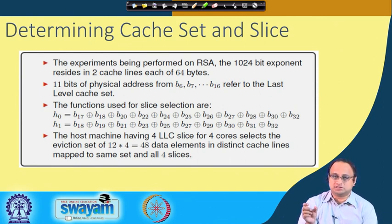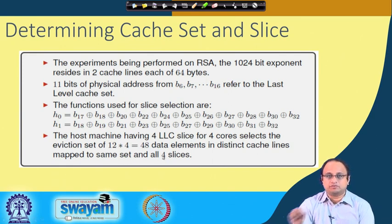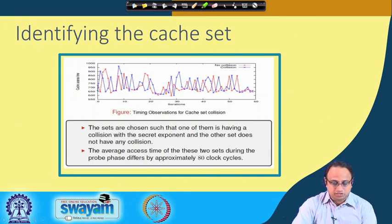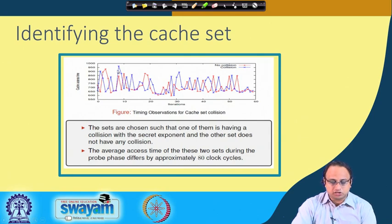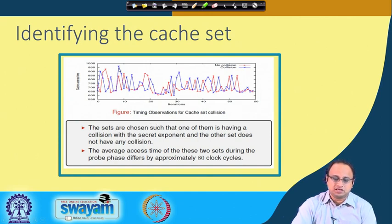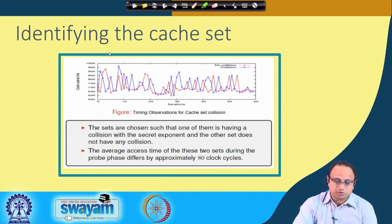The moment we fix a cache set, there are 48 possible addresses which we use to prime and probe. Here is an experiment to show that it indeed works. There are 2 graphs shown: the blue corresponds to a collision, meaning the cache set used to prime and probe is colliding with the secret exponent. If there is a collision, when the spy comes back and probes, it expects an increase in average access time — and that is what you can observe here.